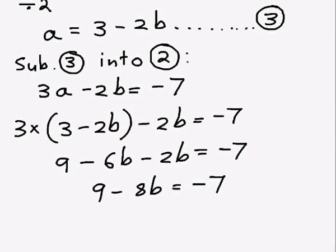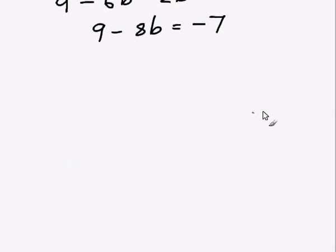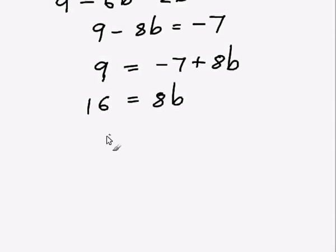Now what I can do is I can add 8b to both sides of the equation, so it will disappear from the left hand side and it will get added to the right hand side. So I get minus 7 plus 8b. Then I can add 7 to both sides of the equation. I get 16 equals just 8b. So if 16 equals 8b that means b must equal 2.